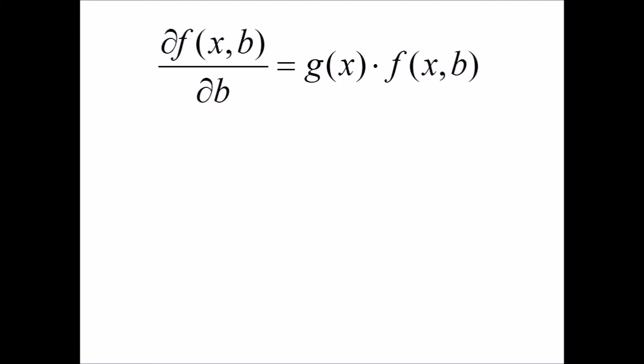Taking the partial of f and demanding that it equals g of x times f of x, b is similar to eigenvector problems in matrix theory. For instance, the operator in our case is the partial derivative operator, and our eigenvector is f of x of b, and the eigenvalue is g of x.